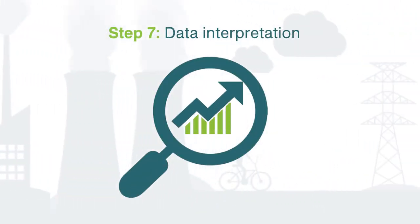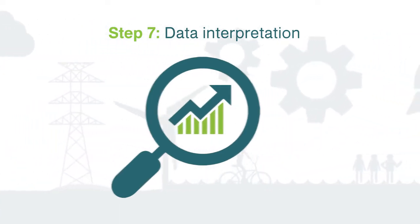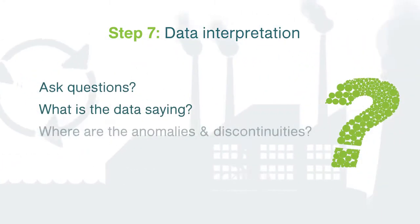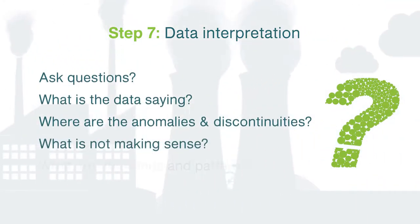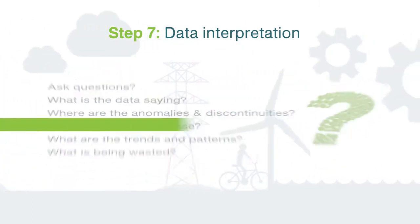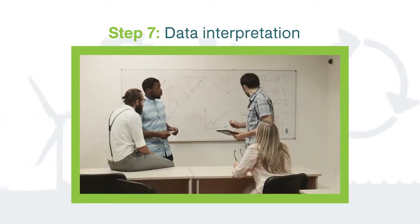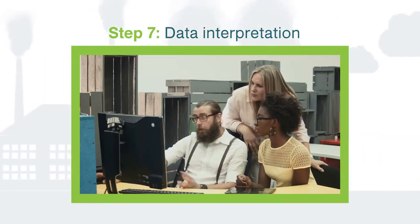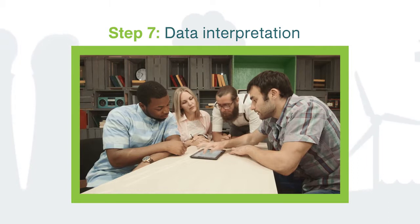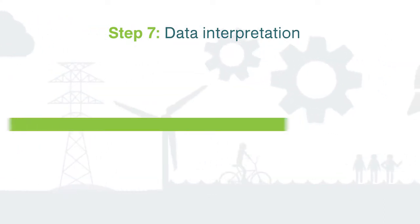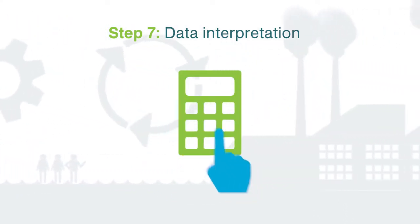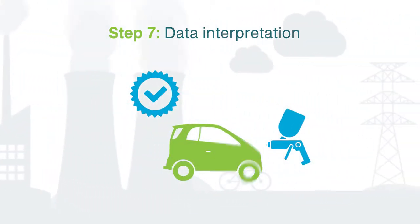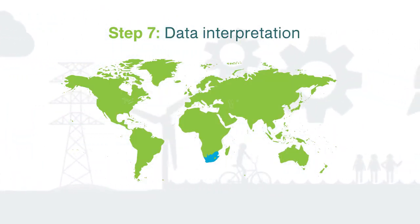Step 7 is data interpretation. It is here that the user will review and analyze the collected and plotted data to prompt the generation of improvement options for implementation. This process calls for insight and experience and can often include brainstorming or other creative problem-solving techniques. Calculations may also be undertaken to determine the overall process efficiency for comparison with national or international benchmark indicators.